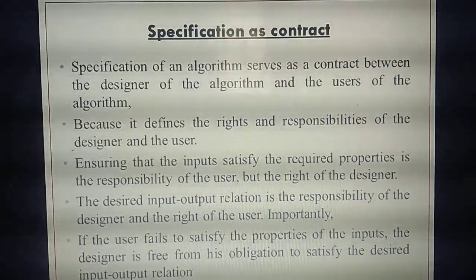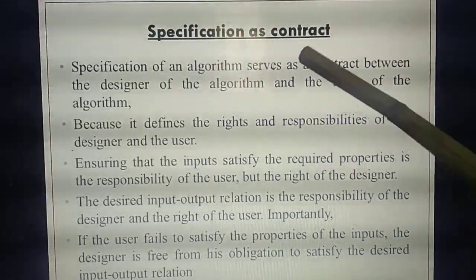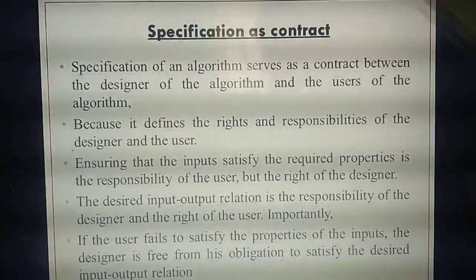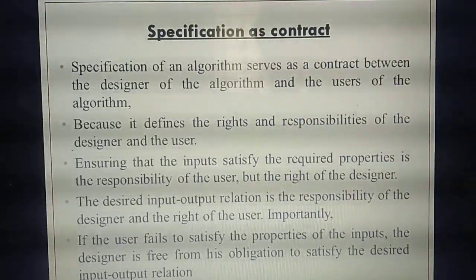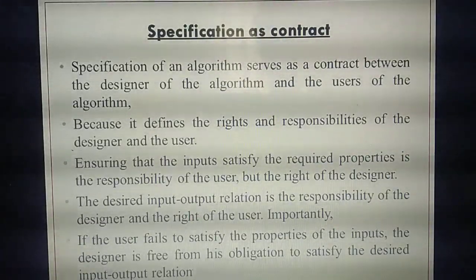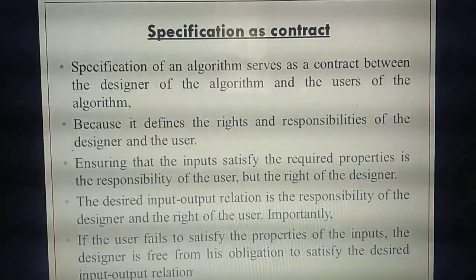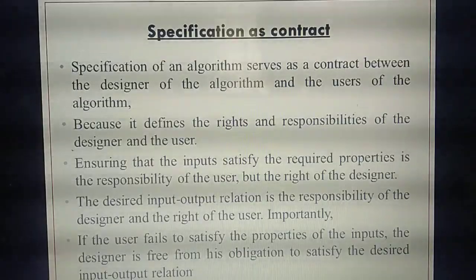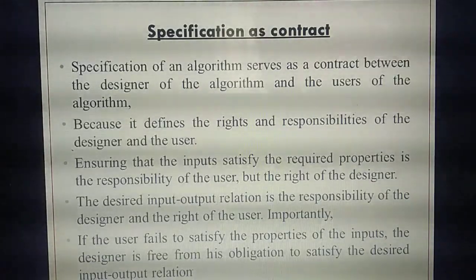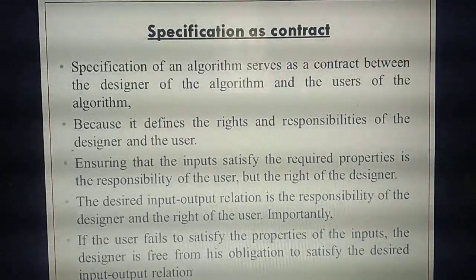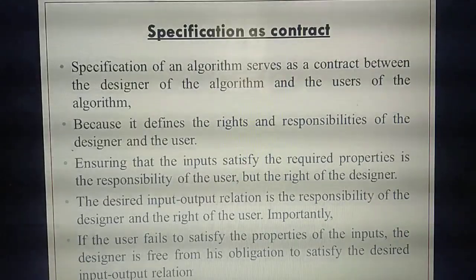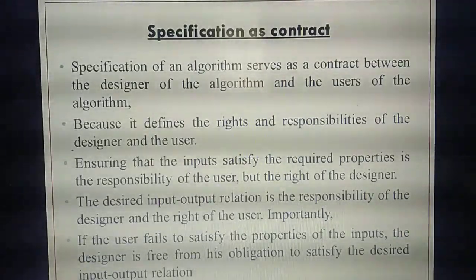So recall that example and study specification as contract. First point: it is a contract between two persons — designer and user. Second: both have rights and responsibilities. Third: input property needs to be satisfied by the user. Input-output relation — both designer and user have responsibility. If the user fails to give the right requirement, you will not get the desired output.